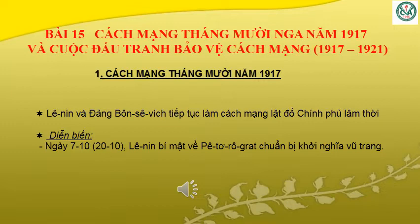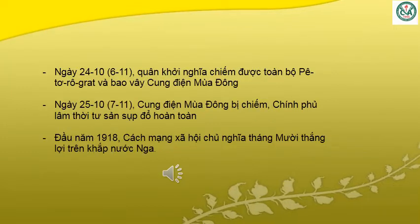Bài 15: Cách mạng tháng 10 Nga năm 1917 và cuộc đấu tranh bảo vệ cách mạng 1917-1921. Ở bài 15, các em sẽ học 2 phần. Phần thứ nhất: Cách mạng tháng 10 Nga năm 1917. Lenin và đảng Bolshevik tiếp tục làm cách mạng lật đổ chính phủ lâm thời. Diễn biến: ngày 7 tháng 10 (tức ngày 20 tháng 10), Lenin bí mật về Petrograd chuẩn bị khởi nghĩa vũ trang.